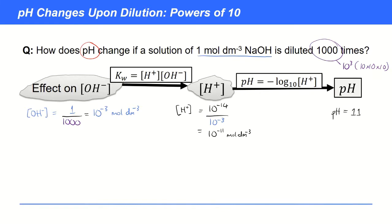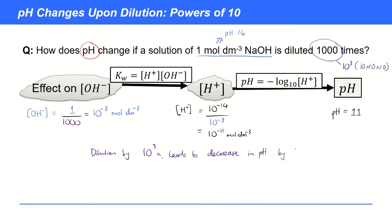The original pH of this solution was pH 14 — you can get that by doing a very similar calculation with the OH- concentration equal to 1. So, unsurprisingly, we've seen here that dilution by 10 to the power 3 times leads to a decrease in pH by 3 units. We can see a 3-unit pH change from a 10³ times dilution — and remember, that's a decrease in pH.